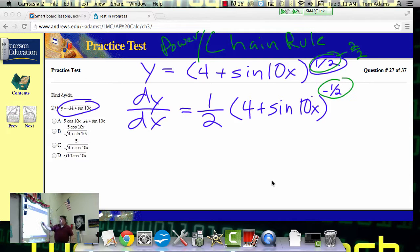Now we need to take the derivative of the stuff on the inside. What's the derivative of four? Zero. What's the derivative of sine of ten x? Cosine. Now this is where it gets a little tricky. It's cosine of ten x, but you have to use the chain rule to that.